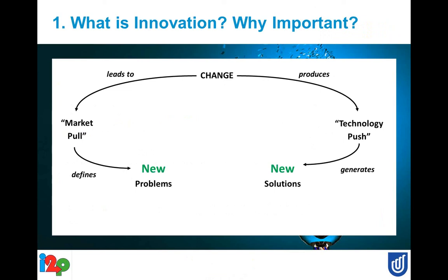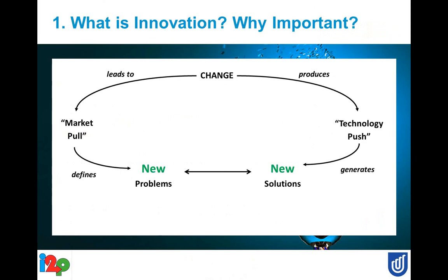Those inventions generate new solutions. So change gives rise to two things: new problems on one hand, and new solutions on the other. Those new solutions might be electric vehicles, radiotherapy in medicine, the internet, or in Australia the concept of reverse mortgages — where retirees sell their house back to the bank but continue living in it and receive an income. The word 'new' here is especially important to the discussion of innovation.